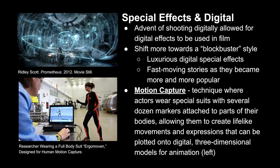As cinema started to be shot more digitally, it allowed for even more digital effects to be used. There was also a shift toward a blockbuster style, characterized by luxurious digital special effects and fast-moving stories. One digital effect common in games and movies today is motion capture, where actors move around in special suits with markers that document their movement and plot it onto a digital model, creating more lifelike CGI directly from the naturalistic way the actor moves.